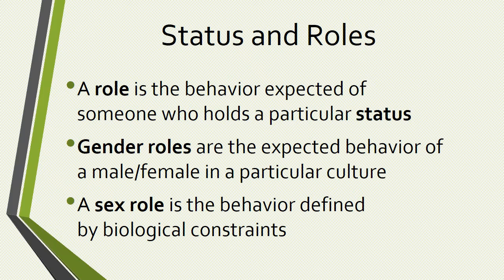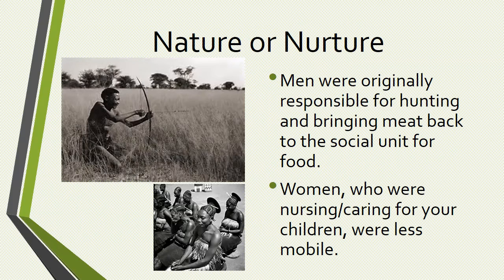The sex role is the behavior defined according to biological constraints. In hunting and gathering societies, men were originally responsible for bringing meat back to the social unit, while women who were nursing and caring for children were less mobile. We do see some evidence that women were also engaged to a certain degree — for example, Sacagawea accompanied Lewis and Clark on their expeditions out west, bringing along her French trapping husband and her newborn child. But for the most part, women were nursing and caring for children.